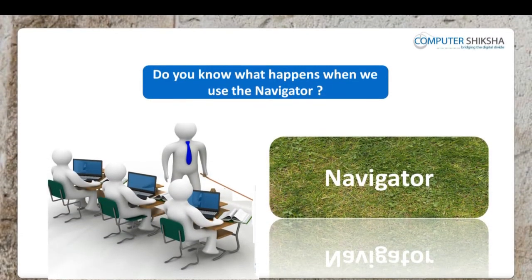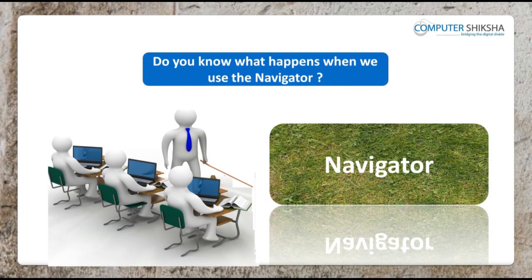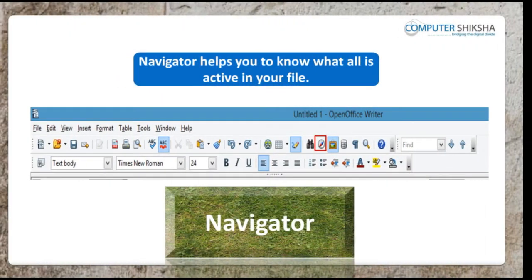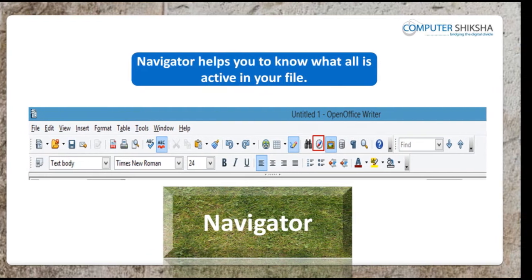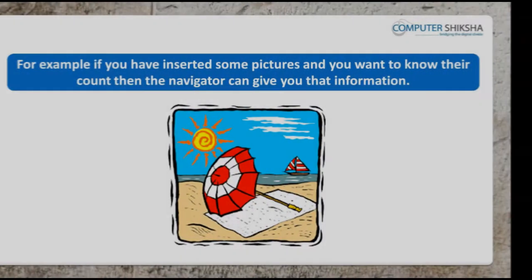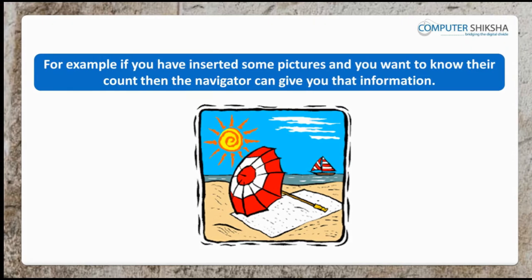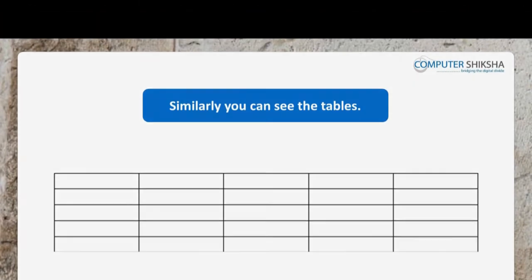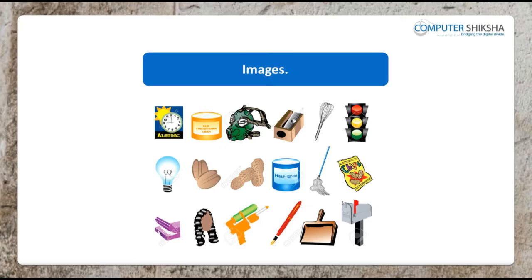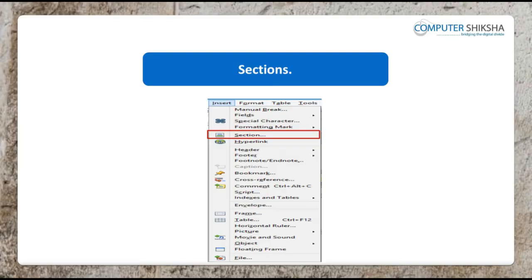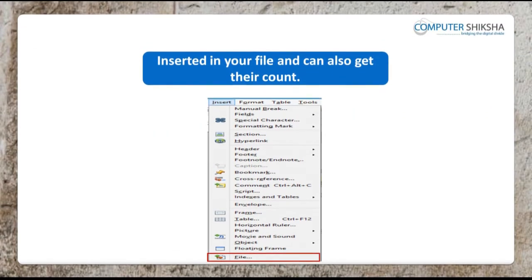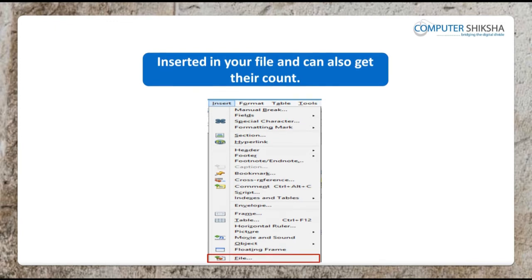Do all of you know what happens when we use the navigator? Navigator helps you to know what all is active in your file. For example, if you have inserted some pictures and you want to know their count, then the navigator can give you that information. Similarly, you can see the tables, images, hyperlinks, sections, etc. inserted in your file and can also get their count.